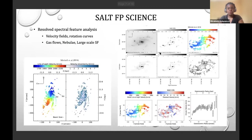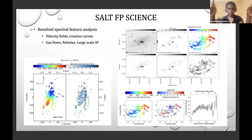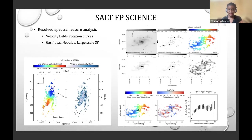An example of the science done with the SALT Fabry-Pérot imaging mode includes distribution studies, kinematic studies — rotation curves, velocity fields, dispersion velocities — and large-field studies of gas flows, nebulae, and large-scale star formation in nearby galaxies. Because RSS has a very wide field of view, you can get spectra for all pixels in the entrance aperture, enabling resolved star formation studies.